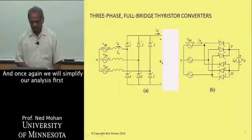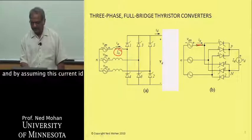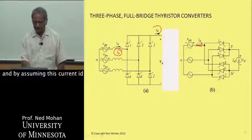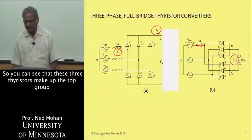Once again, we will simplify our analysis first by ignoring this inductance L sub S and by assuming this current ID to be some constant current ID.